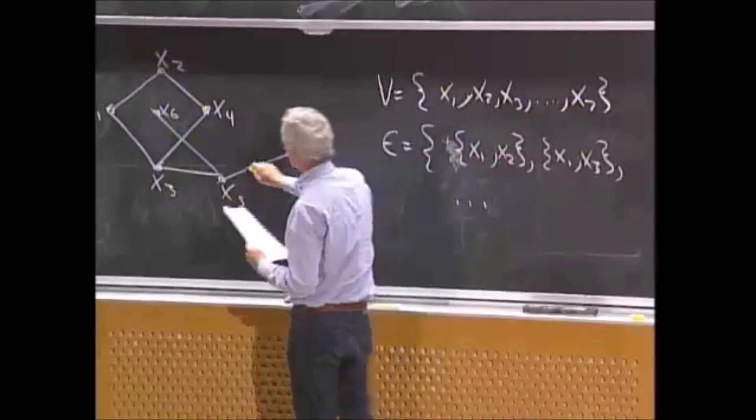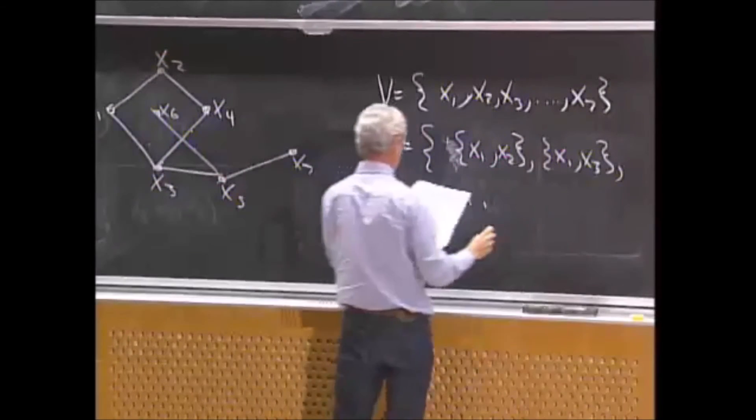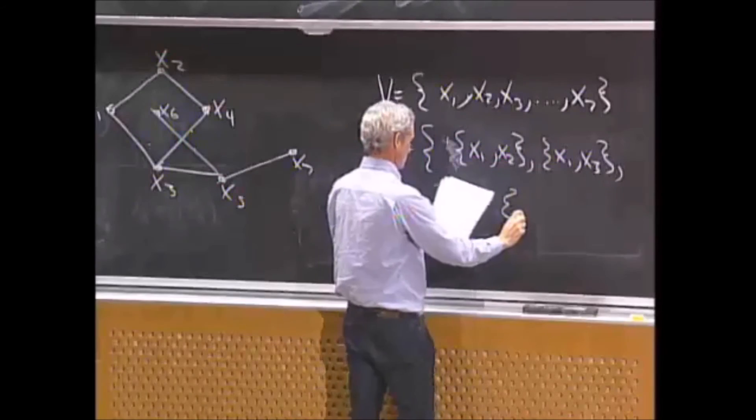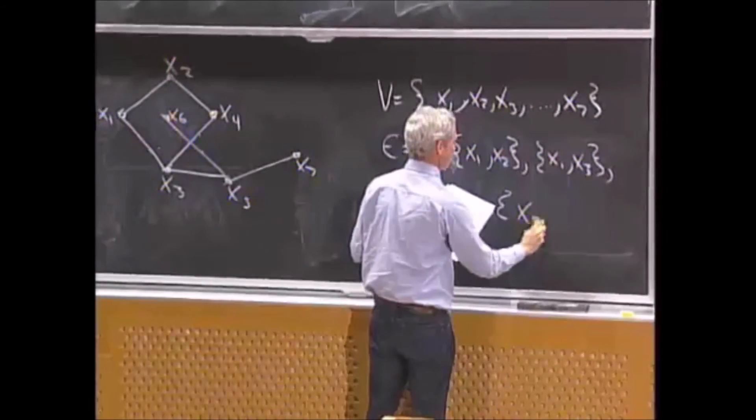I think we've got, let's see, 1, 2, 3, 4, 5, 6, 7 edges in this graph. And the last one would be x5, x7.